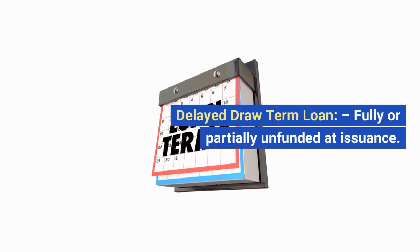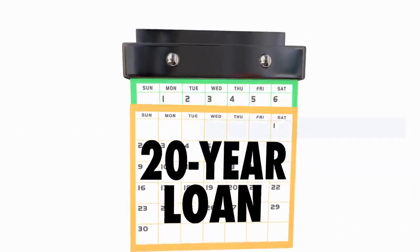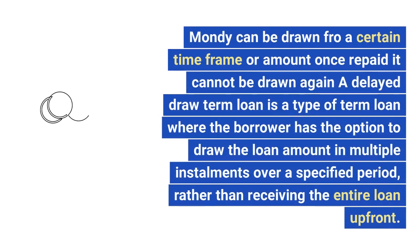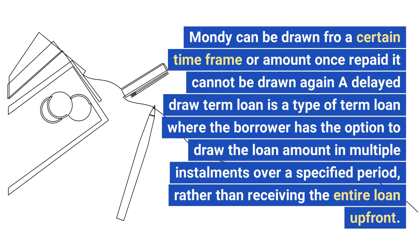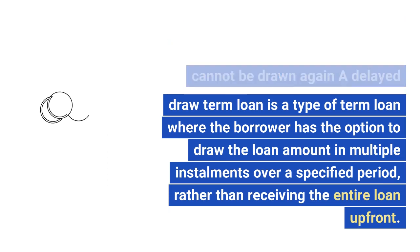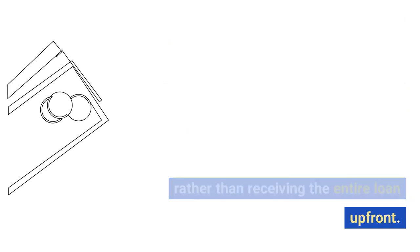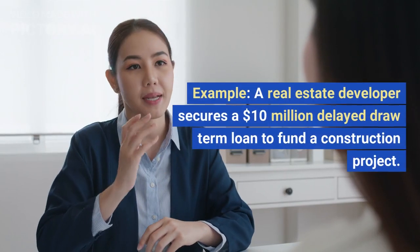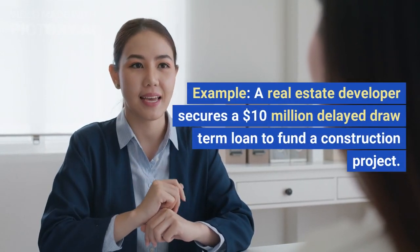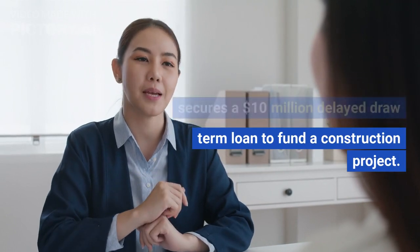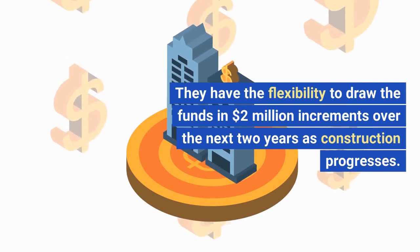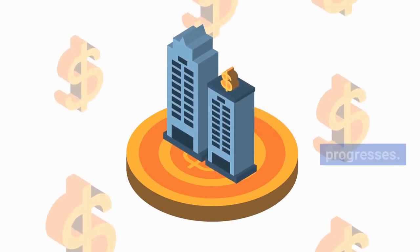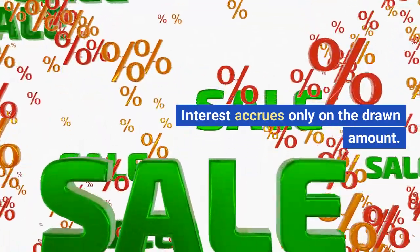Delayed draw term loan: fully or partially unfunded at issuance. Funds can be drawn for a certain time frame or amount; once repaid, they cannot be drawn again. A delayed draw term loan is a type of term loan where the borrower has the option to draw the loan amount in multiple installments over a specified period, rather than receiving the entire loan up front. Example: a real estate developer secures a $10 million delayed draw term loan to fund a construction project. They have the flexibility to draw the funds in $2 million increments over the next two years as construction progresses.